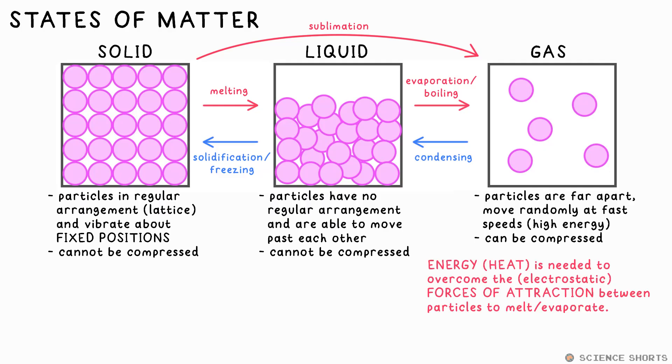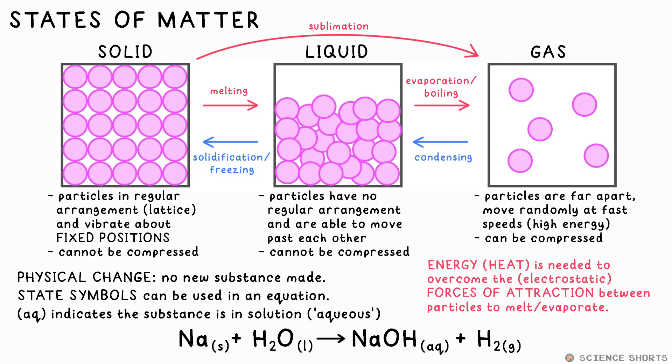To melt or evaporate a substance, you must supply energy, usually in the form of heat, to overcome the electrostatic forces of attraction between the particles. We don't say we're breaking bonds in this case though. Note that none of these make a new substance, so these have to be physical changes. We indicate what state substances are in with state symbols. Brackets S for solid, L for liquid, G for gas, and AQ for aqueous. That means dissolved or in solution, again like salt in water.